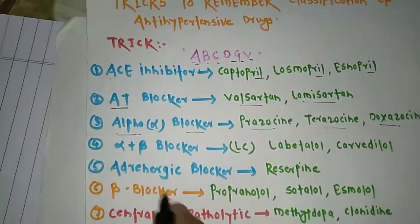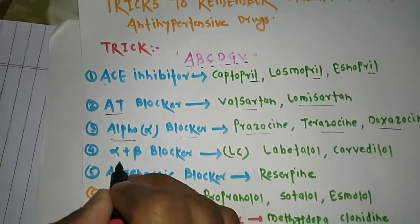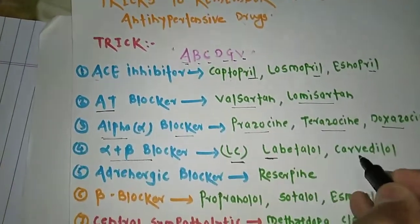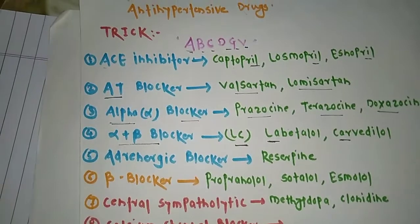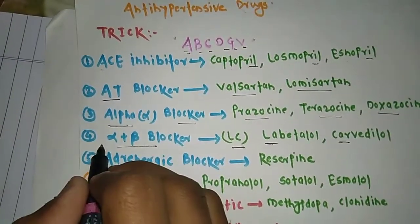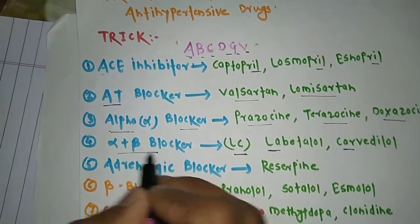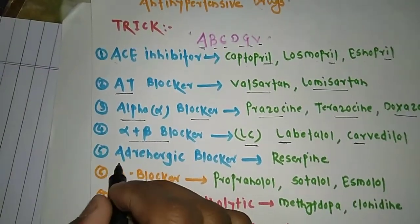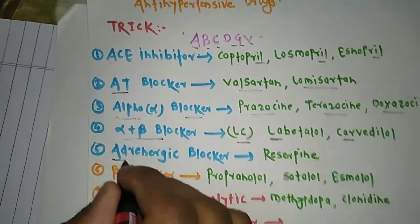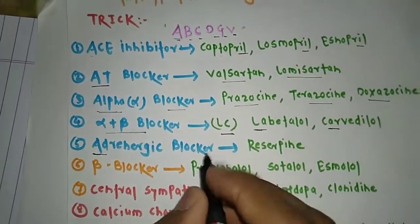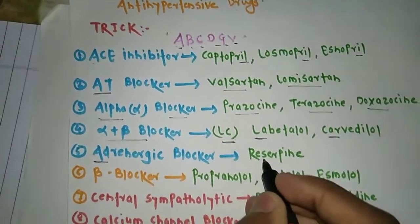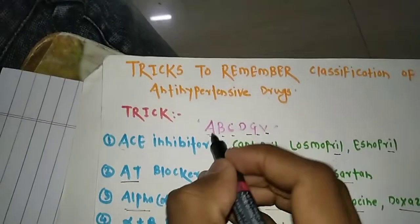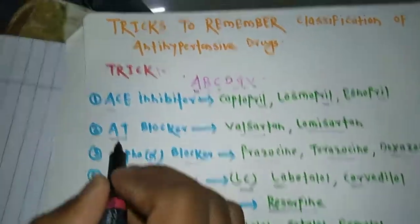The fourth A is Alpha plus Beta blocker. Examples include labetalol and carvedilol. These two drugs block both alpha and beta receptors — they are mainly beta blockers but also act on alpha receptors. The fifth A is Adrenergic blocker. Among adrenergic blockers, the main one used as an anti-hypertensive is reserpine.